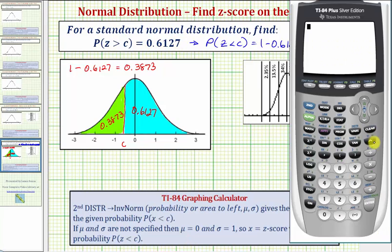From the home screen, we press second vars for the distribution menu. We want to select option three, inverse norm. This is the screen that's new on the newer version of the 84. We wouldn't see this screen on the older 84 or the 83.